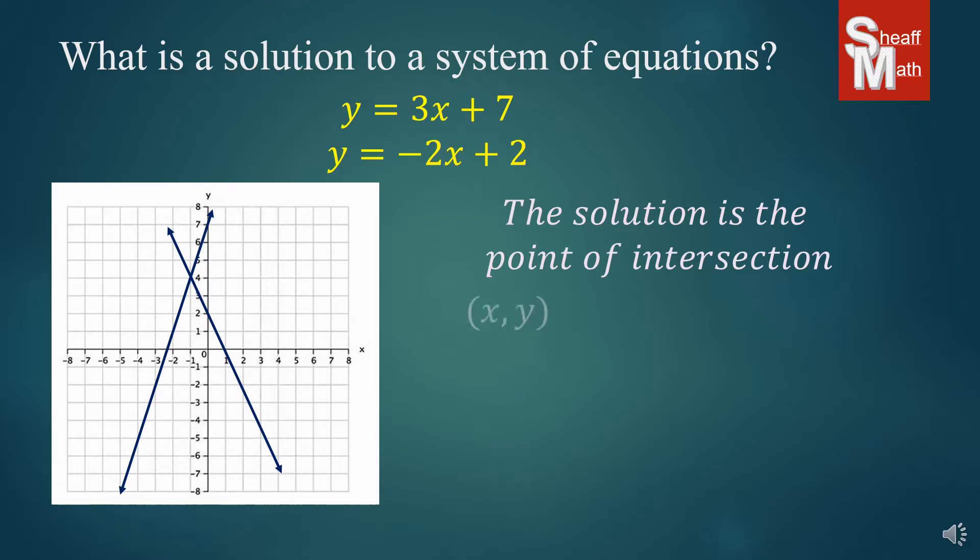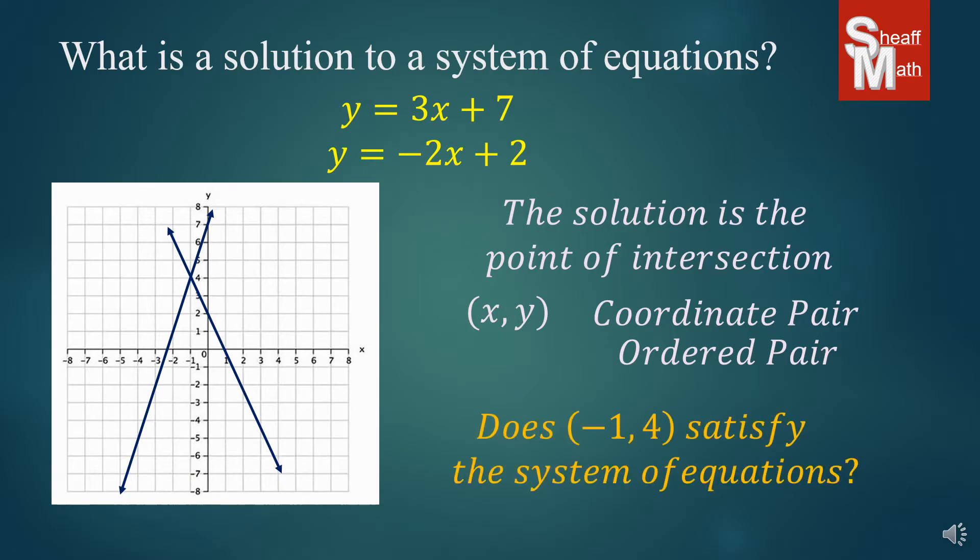Okay? And this point, we're going to find the XY for it, and we call that a coordinate pair and an ordered pair. Now, the question that you might be asked would be something like this: Does (-1, 4) satisfy the system of equations?